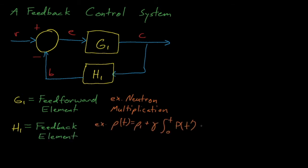G1 might, for example, represent the prompt multiplication of delayed neutrons in a reactor, so the point kinetics equations, while H1 might represent that power integral from before that modified our system's initial reactivity insertion.